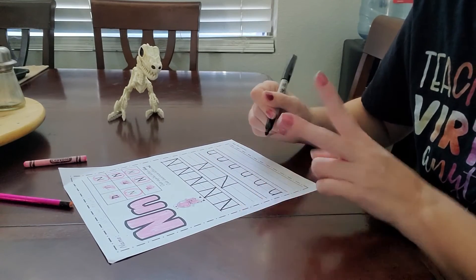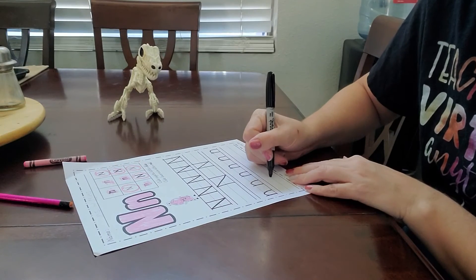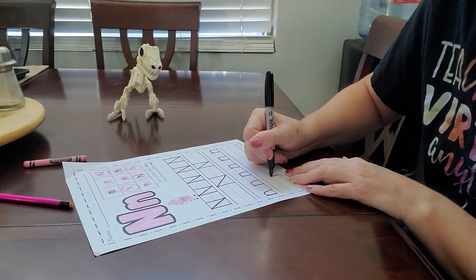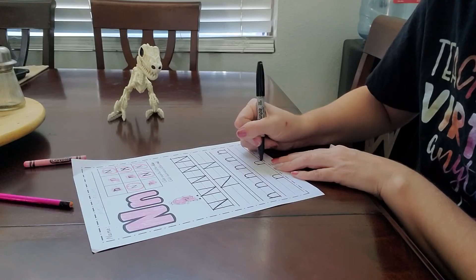And then you're going to write two of them by yourself. So go to the dotted line. Write a line from the dotted line to the bottom. And then make a rainbow. One more. Line. Rainbow. And just like that, we have our Ns.